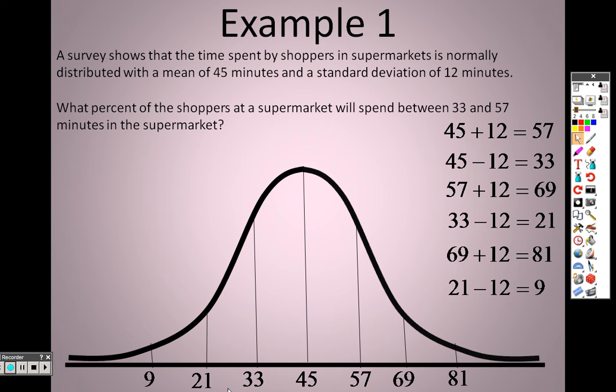After I have all this in, it says, what percent of the shoppers at a supermarket will spend between 33 and 57 minutes in the supermarket? In between, here's 33 and 57. Here it is. Well, if you use your graph, that's all you need to do. Look at your bell curve there. Look at it and see what percentage would lie in between those two points. In between 33 and 57 is 34 and 34, which is 68%.